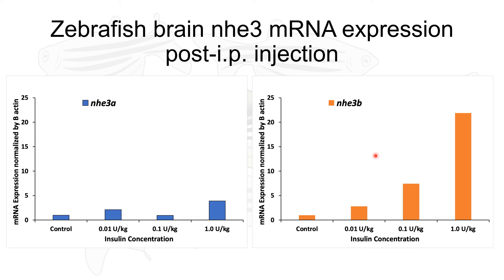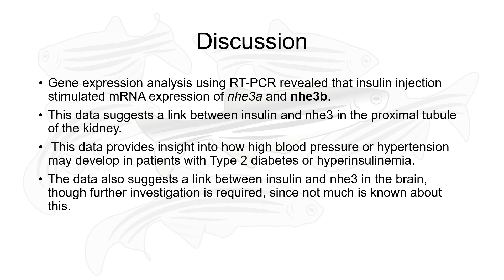Overall, our findings were consistent in the kidney, showing that increasing insulin in the proximal tubule increases NHE3A expression in zebrafish. Gene expression analysis by PCR revealed that insulin injection stimulated mRNA expression of NHE3A and NHE3B — duplicate copies of the NHE3 gene in zebrafish. This data suggests a link between insulin and NHE3 activity in the proximal tubule and provides insight into how high blood pressure or hypertension may develop in patients with type 2 diabetes or hyperinsulinemia.